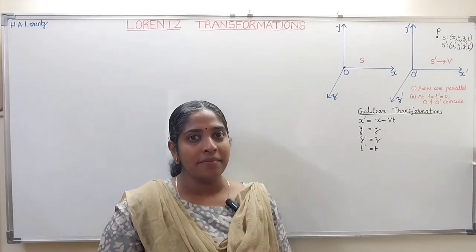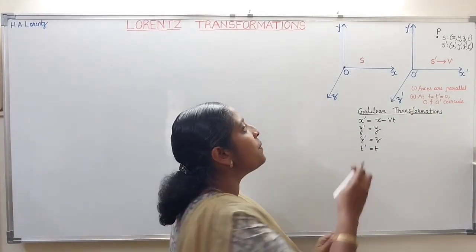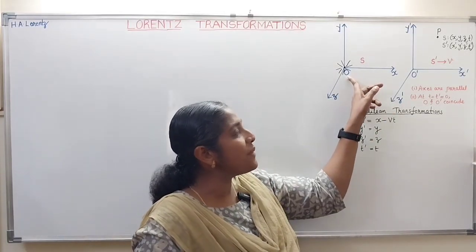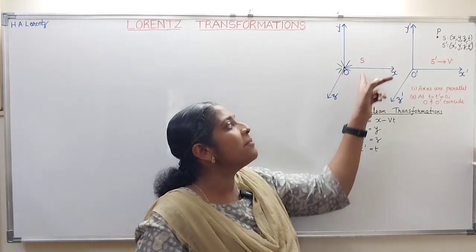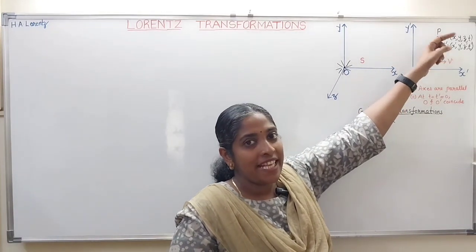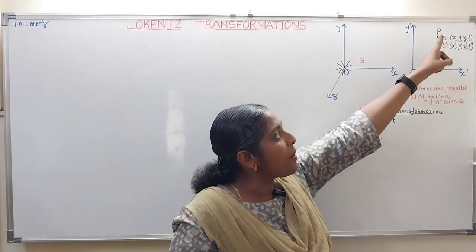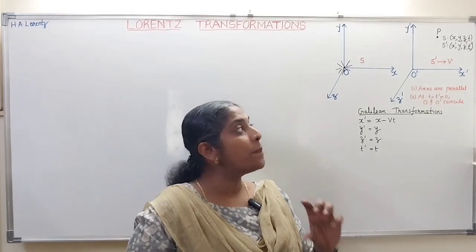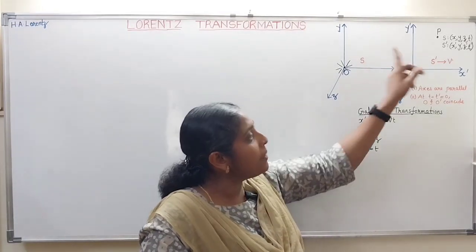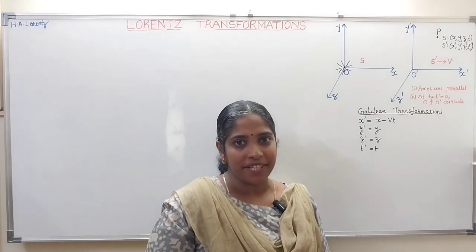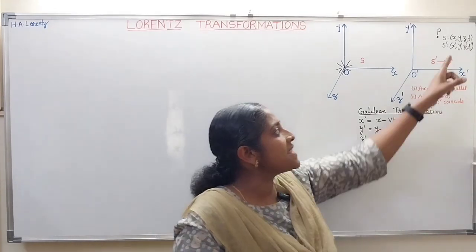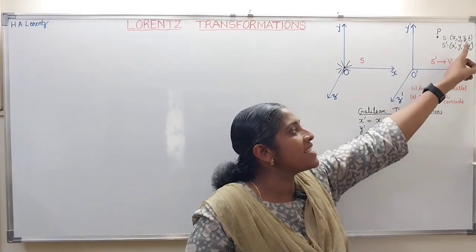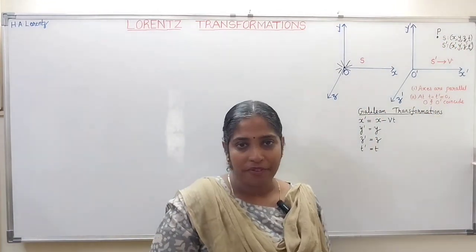Now we can imagine a source of light situated here. A spherical wavefront is starting from the light source at point O. After some time, let that spherical wavefront reach point P. When the light reaches point P, the position and time are measured by the observer in S frame of reference and by an observer in S' frame of reference. Let those coordinates be x, y, z, t by the observer in S frame and x', y', z', t' by the observer in S' frame.